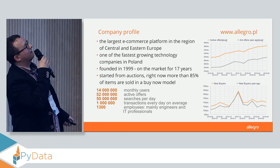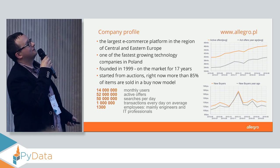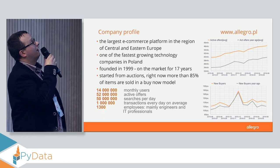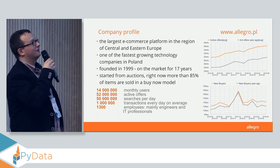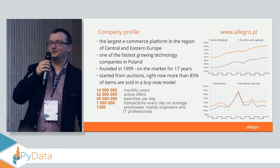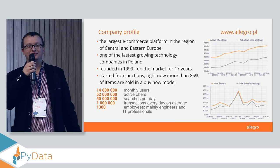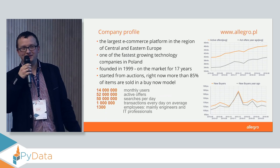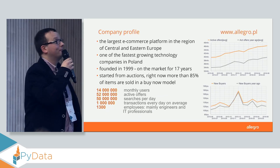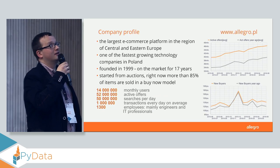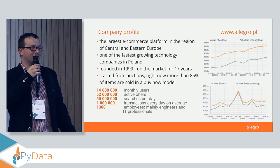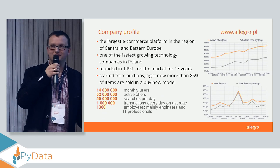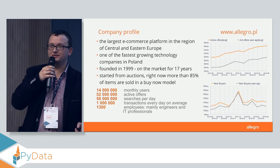So this is our company profile. We are one of the largest e-commerce platforms in Central and Eastern Europe. We have millions of offers, millions of users — a lot of data, a lot of behavioral data coming from our website. We use machine learning and deep learning quite a lot because we have a lot of complicated data, like texts and images.